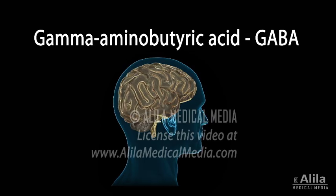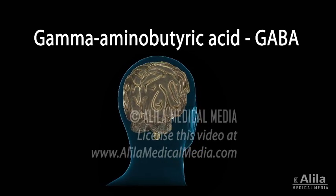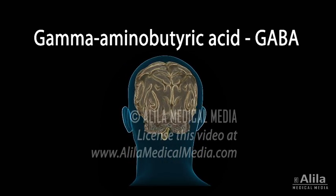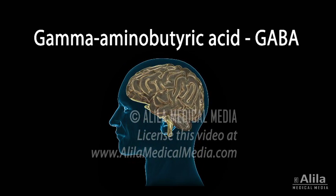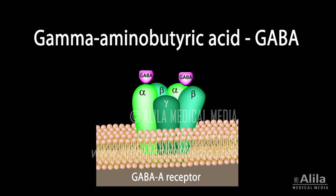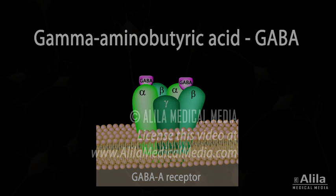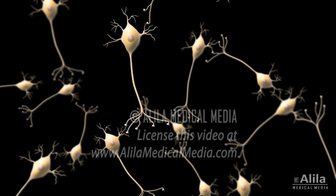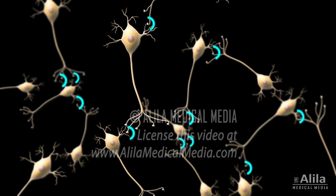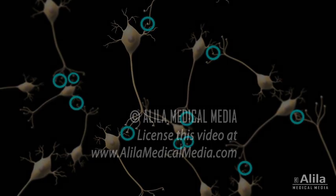Gamma-aminobutyric acid, or GABA, is the primary inhibitory neurotransmitter in the mature brain. It reduces neuronal activity of target cells through its binding to GABA receptors present on the cell surface. Nearly half of all synapses of the brain express some kind of GABA receptor and are thus responsive to GABA.